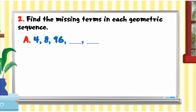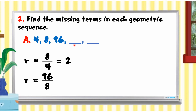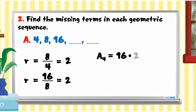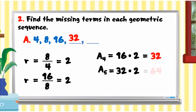For the geometric sequence 4, 8, 16, the common ratio is 8 divided by 4, which is 2. Checking: 16 divided by 8 is also 2. To get the fourth term, multiply 16 by the common ratio of 2, giving 32. To get the fifth term, multiply 32 by 2, giving 64. Therefore, the terms after 16 are 32 and 64.